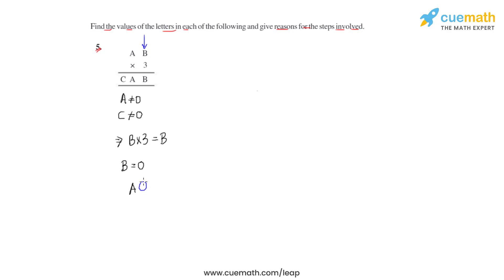If B equals zero and we rewrite the given product, we'll have A, then B with the value of zero, times 3 gives us CA and again zero.